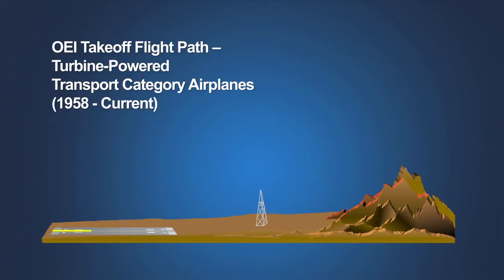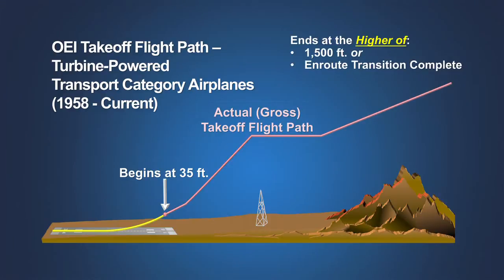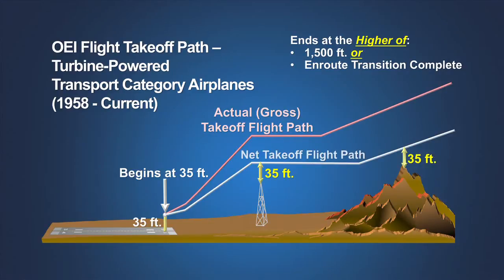Beginning in 1958, the certification rules defined a separate takeoff flight path that begins at 35 feet above the runway surface at the end of the takeoff distance. It is a one-engine-inoperative path that continues through each of the takeoff segments and ends when the airplane is at a height of 1,500 feet above the runway, or at the point at which the transition to the en route configuration is complete, whichever is higher. This gross takeoff flight path represents the one-engine-inoperative performance the airplane has been demonstrated capable of achieving for a given weight, thrust configuration, and set of environmental conditions. These revised certification rules also defined a net takeoff flight path, determined by decreasing the airplane's demonstrated one-engine-inoperative performance by a conservative margin. When required by the operating rules for turbine-powered airplanes, this net takeoff flight path must clear obstacles by 35 feet.